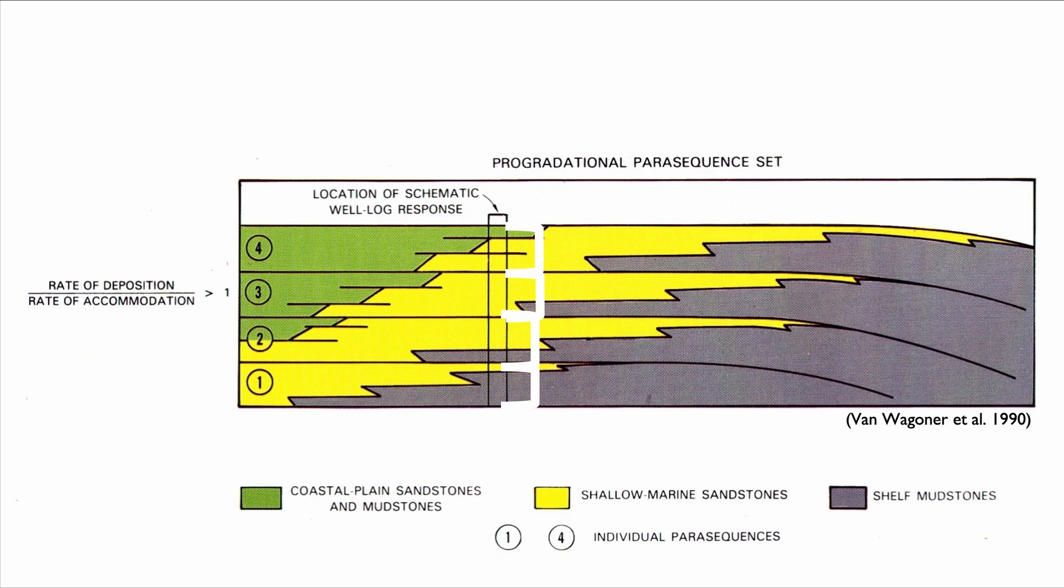What's interesting is with each parasequence, we have less and less of the shelf mudstone and more and more of the sand, this yellow colored sand. At the last parasequence, we even have a little bit of that green facies, which represents the coastal plain. The implication of this 1D view is profound because it indicates that the system is prograding.